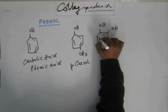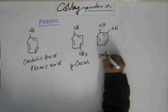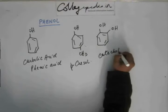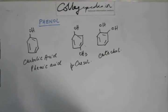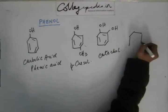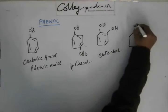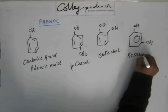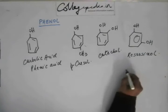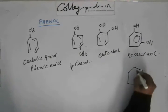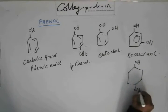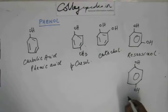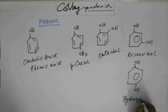If we have 1,2-dihydroxybenzene, then the name of the phenol is catechol. If that hydroxy group is at meta position, then we call it resorcinol.